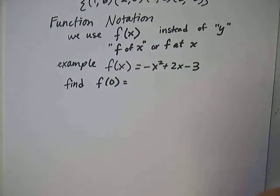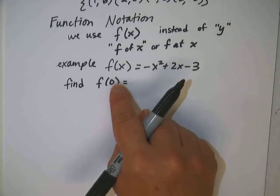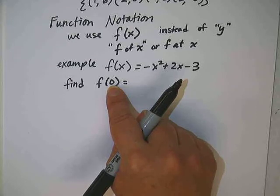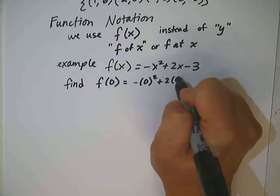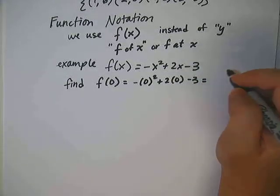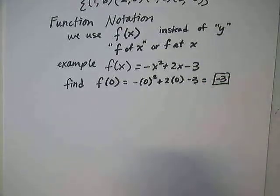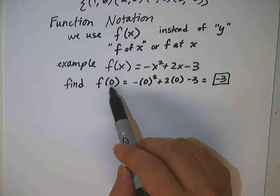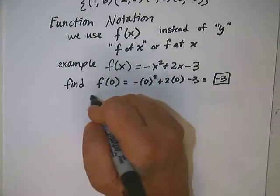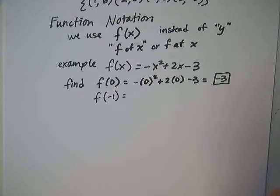Now we're going to find some function values. How do I find f(0)? Instead of putting an x in the parentheses, I'm putting a 0 in the parentheses. That means the value of x I'm using is 0. I want x to equal 0, so I'm going to plug in 0 everywhere that I have an x. What's the value of the function at 0? Negative 3. So f(0) = -3, meaning when x = 0, the y value is -3.